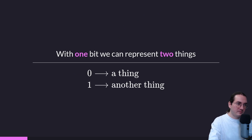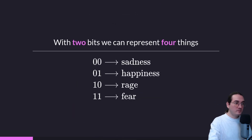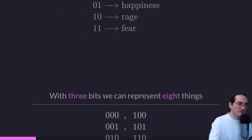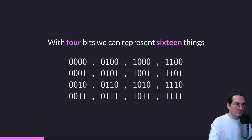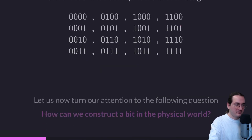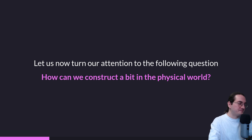With one bit we can represent two things; with two bits we can represent four things, like four different emotions; with three bits we can represent eight things; with four bits we can represent sixteen things, and so on.